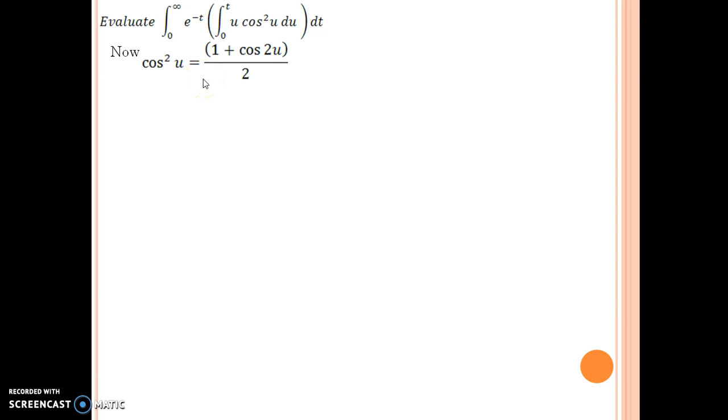Then when you take Laplace on both sides, you can simplify the RHS by linearity property of L and then you obtain 1 upon 2s plus 1 upon 2 times s upon s square plus 4.